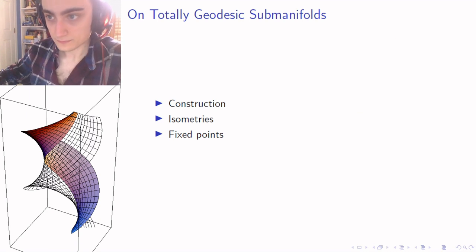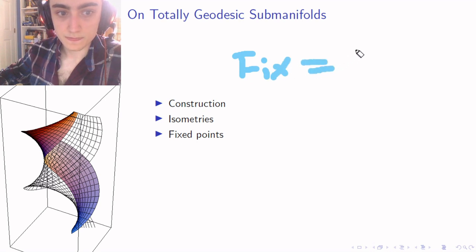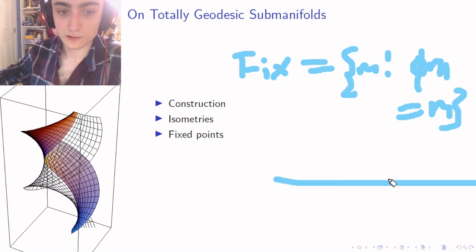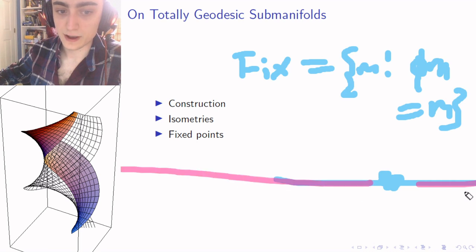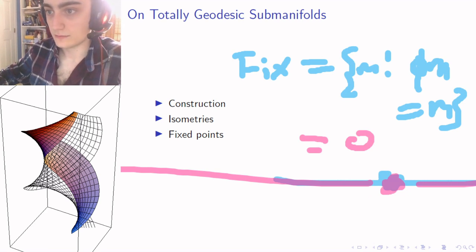Any function, and in particular isometries, have a fixed point set — the points in M that the isometry sends back to themselves. In our example of the rotation by pi, all of R+ and R- move, but the origin doesn't move, so we'd say Fix equals the origin in this case. That's whatever is fixed by the isometry.